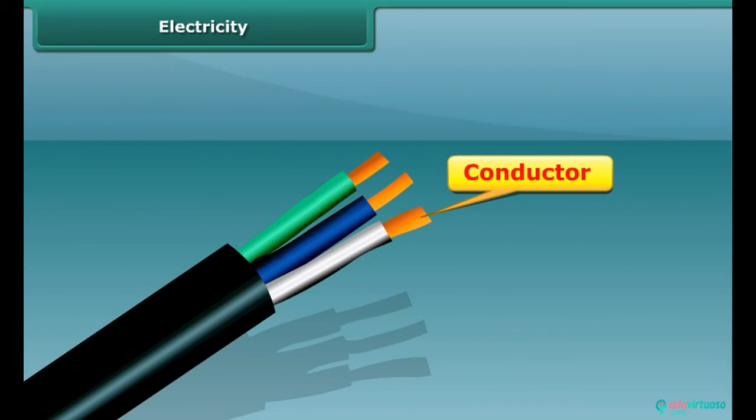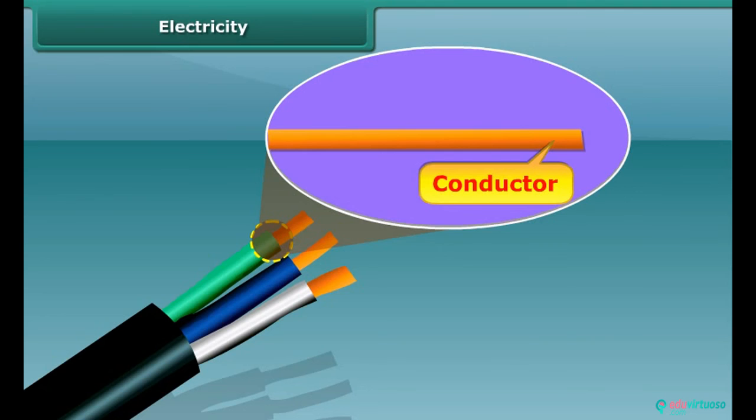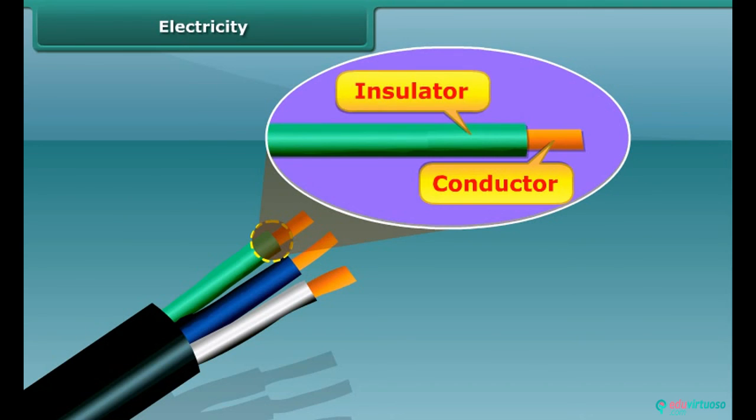Both conductors and insulators are important while using electricity. The conductors like copper or other metallic wires are used for electric supply, but at the same time, these metallic wires are coated by insulating materials like plastic or rubber for safety.